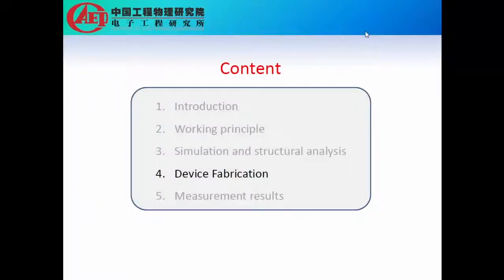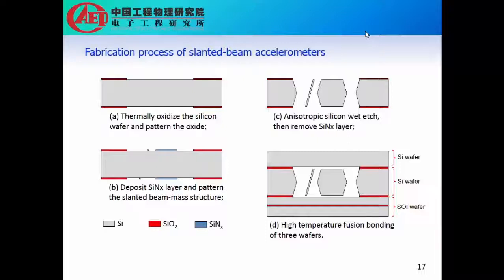The next is device fabrication. First, we thermally oxidize the silicon wafer and pattern the oxide. Then we deposit the silicon nitride layers and pattern the slanted beam-mass structure. We use anisotropic silicon wet etching to form the beam and mass structure. Then we remove the silicon nitride layer. Finally, we bond the three wafers together by using high-temperature fusion bonding. The top and middle wafers are silicon wafers, and the bottom wafer is an SOI wafer.